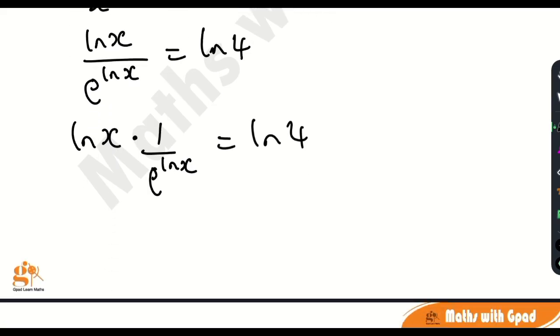Now, from the negative log indices, if you have a raised by negative x, this can be rewritten as 1 over a raised by x. So you are basically taking the reciprocal of a raised by x because of the negative sign.